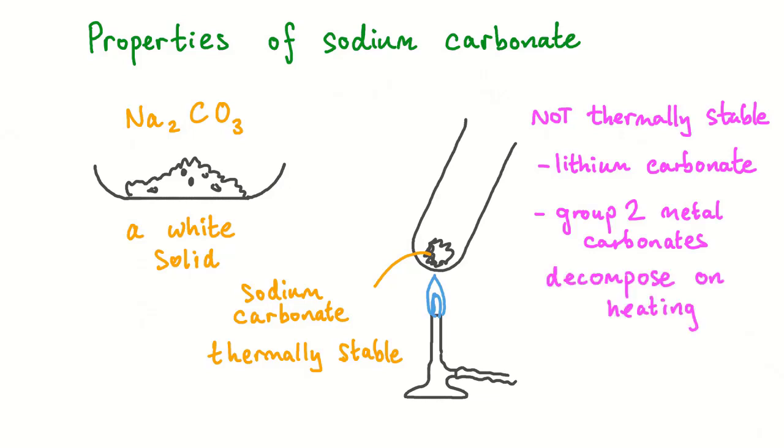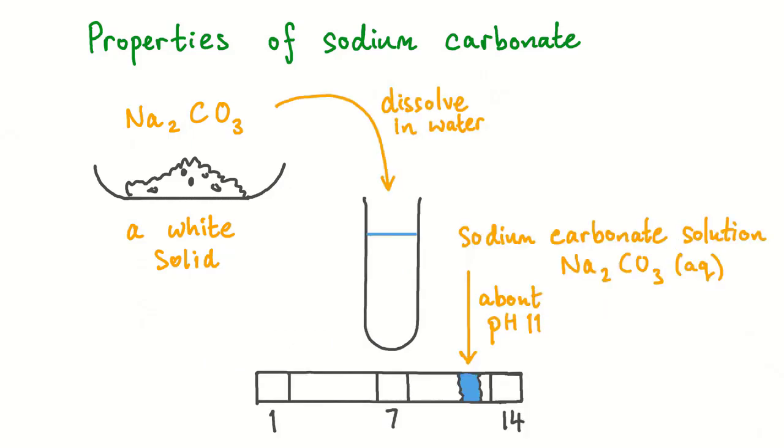Lithium carbonate and group 2 metal carbonates decompose on heating. When sodium carbonate is dissolved in water, it produces an alkaline or basic solution. The resulting solution would have a pH of about 11. That would turn universal indicator paper blue.